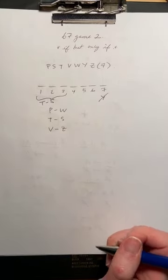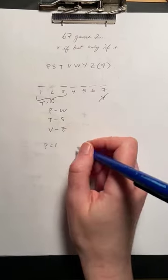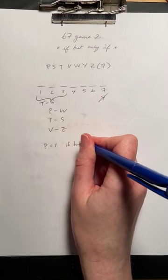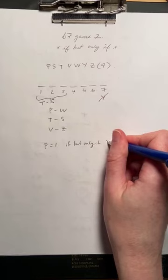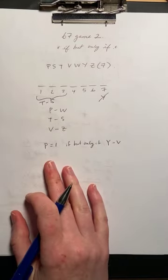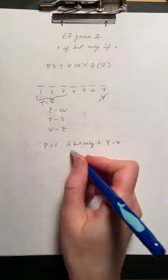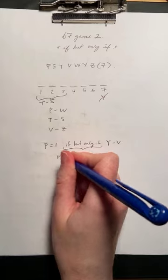And then the last rule, P lectures first, if but only if, Y lectures before V. All right, so if you watched my previous video, then you'll know that if but only if can be replaced with a double arrow.